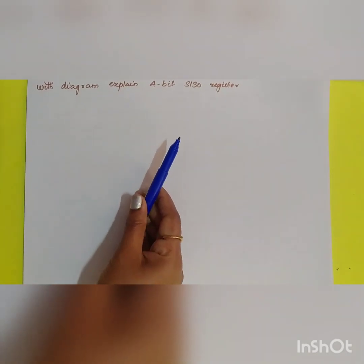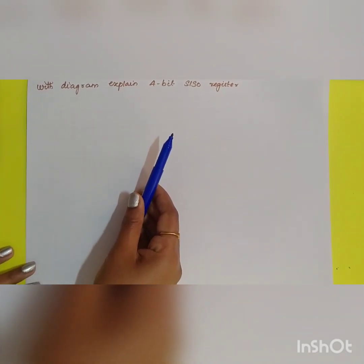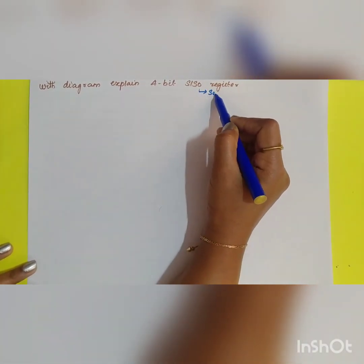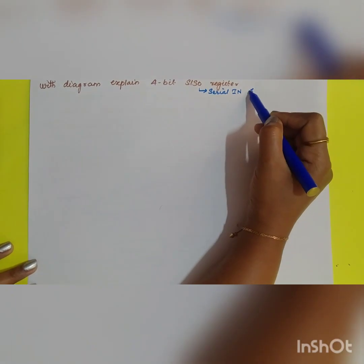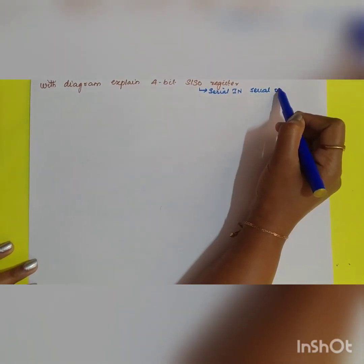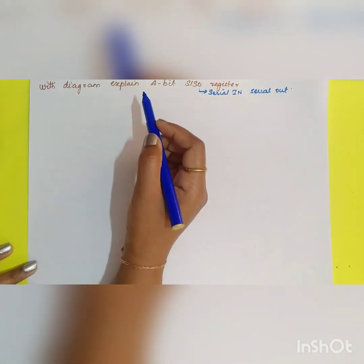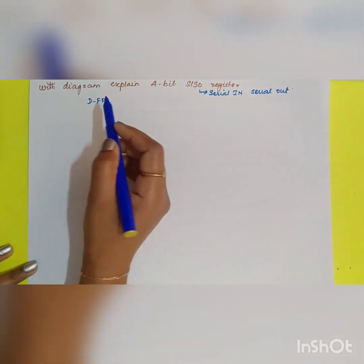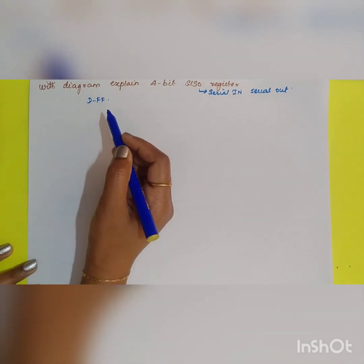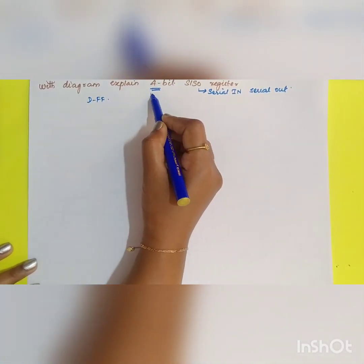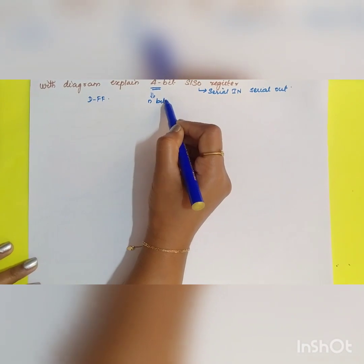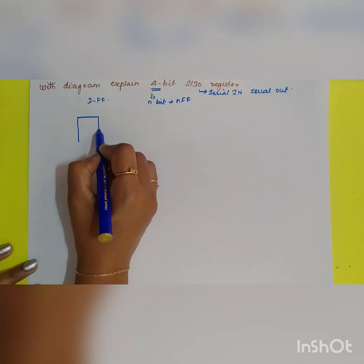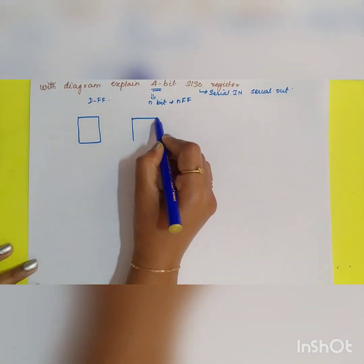The next question is: with a diagram, explain a 4-bit SISO register. SISO stands for Serial In Serial Out. So let us design a serial in serial out register using D flip-flops. Since it is a 4-bit register, you require 4 flip-flops.